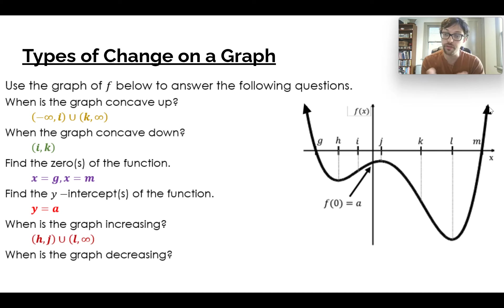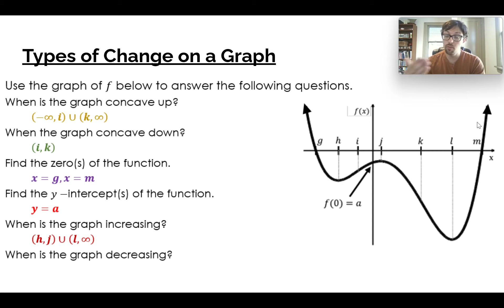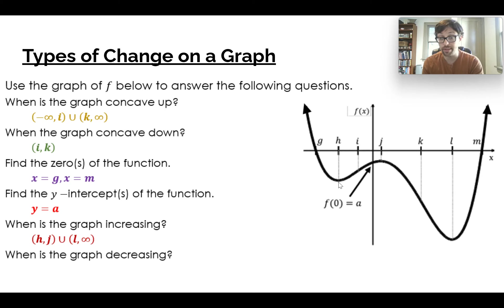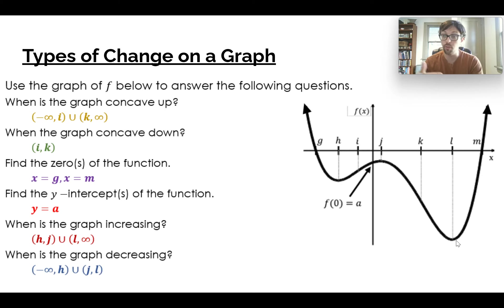Our intervals of increasing are from h to j — talking about it in terms of x values — and l to infinity, that's also where we're going up. Where we're decreasing is the opposite: we're going down right here, so we want from j to l because that's the other interval where we're going down.